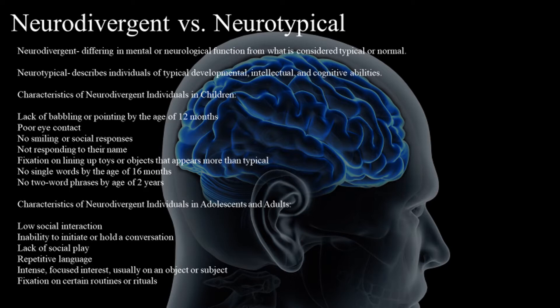Characteristics of neurodivergent individuals in adolescents and adults include low social interaction, inability to initiate or hold a conversation, lack of social play, repetitive language, intense focused interest usually on an object or subject, and fixation on certain routines or rituals.